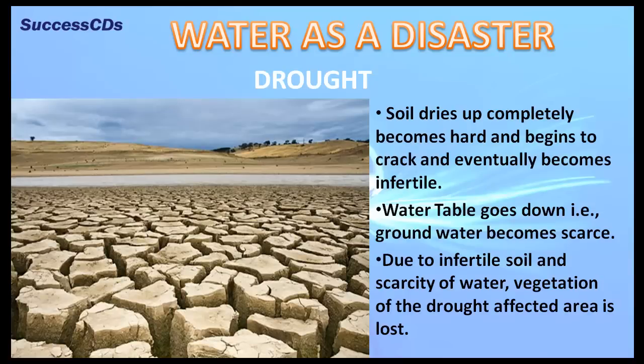Acute water crisis can have the following effects: soil dries up completely, becomes hard and begins to crack, and eventually becomes infertile. The water table goes down, that is, groundwater becomes scarce. Due to infertile soil and scarcity of water, vegetation of the drought-affected area is lost.